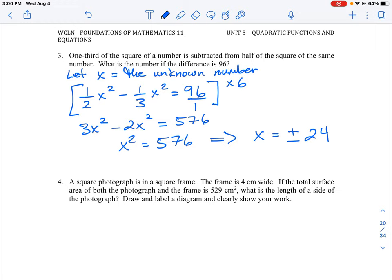So what is the number? There are actually two cases: x can be equal to 24, or x could be equal to negative 24, because in this case we're not taking a measurement of anything, so the negative number is a possibility. When we square it and then do our operations there, we'll still have a difference of 96. So there are two solutions to this: plus or minus 24.